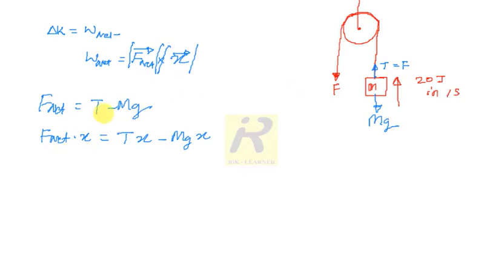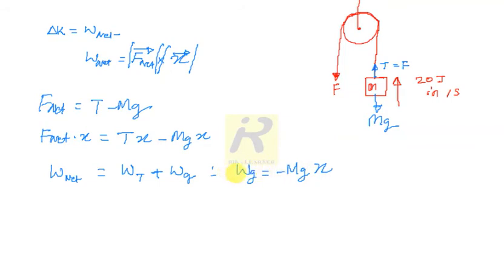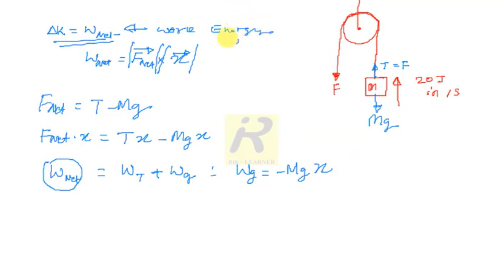This is nothing but the net work done — work done by tension minus work done by gravity, where Wg is minus Mg·X. By the work-energy theorem, this net work done equals the change in kinetic energy, which is exactly 20 Joules. So we have: Wt plus Wg equals 20 Joules, which means Wt minus Mg·X equals 20 Joules.